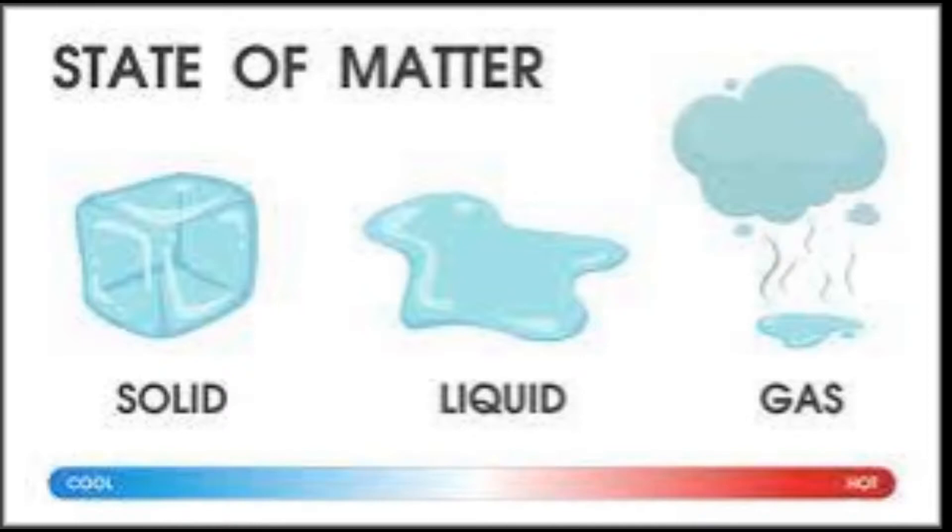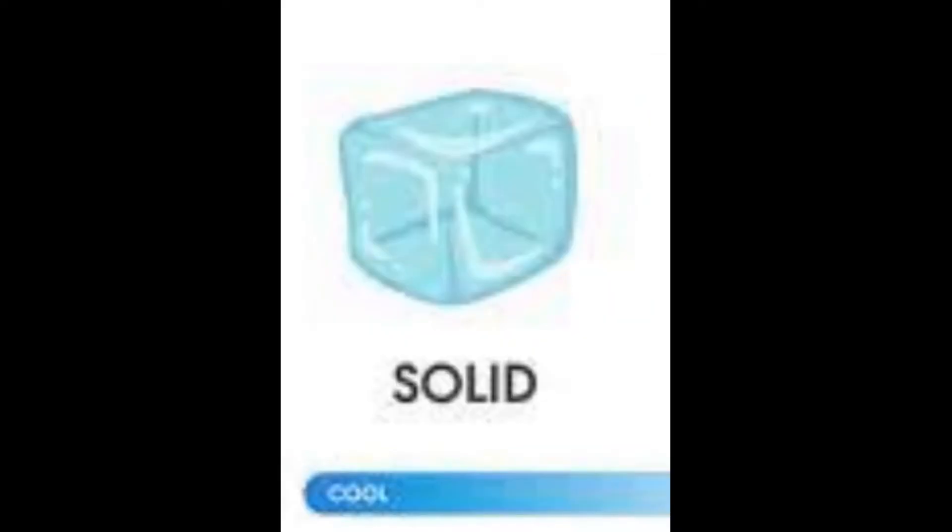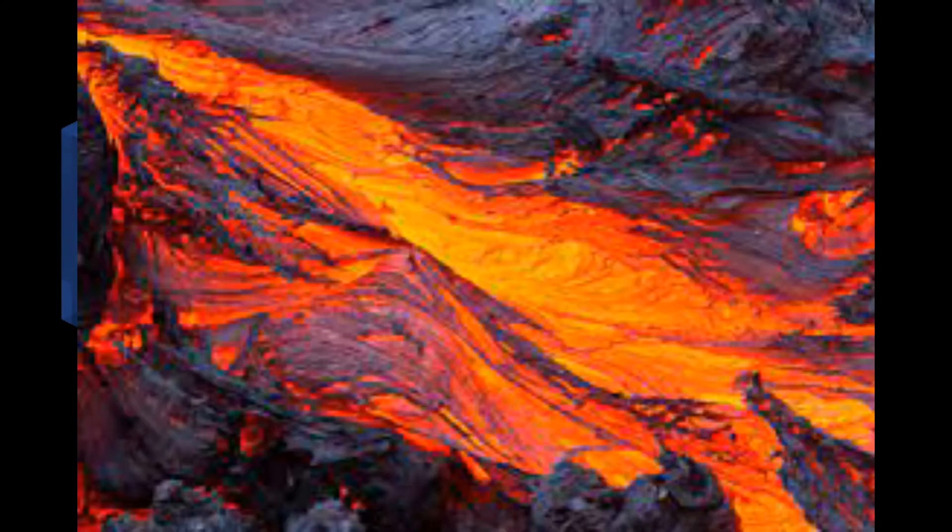The liquid state of matter is like an intermediate between solid and gas. It's too hot to be a solid, and too cold to be a gas. Some examples of liquid are water, coke, and magma.